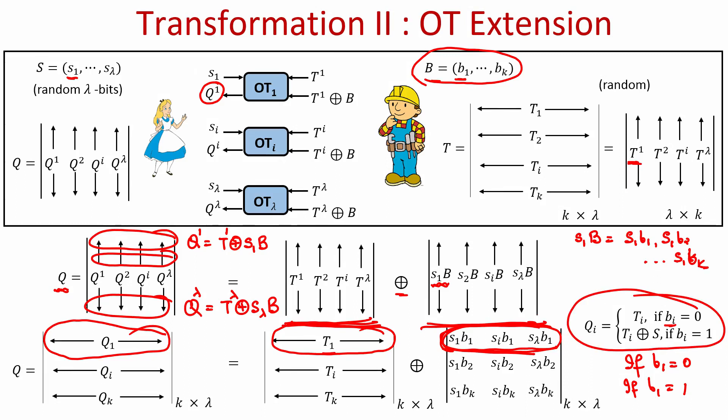This is precisely what we wanted: each row Q_i is either T_i or T_i XOR S depending on B_i, without Alice knowing which. Hence the magical mechanism has been achieved. We still need to analyze the security of this mechanism, the computation it involves, and so on — which we will do in the next lecture. Thank you.